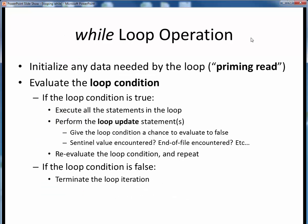Summing up the operation of a while loop: we first perform a priming read to initialize any data needed by the loop or its condition. Then we evaluate the loop condition. If the loop condition is true, we execute all the while loop statements and we perform the loop update, which gives the loop condition its first chance to evaluate to false for the next pass.